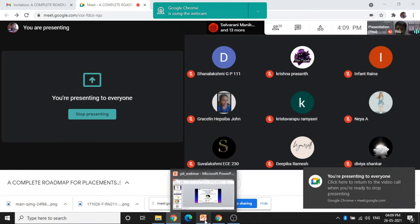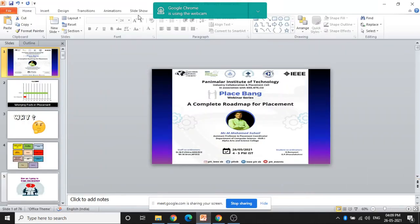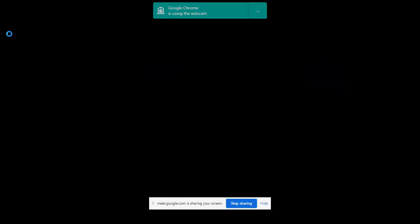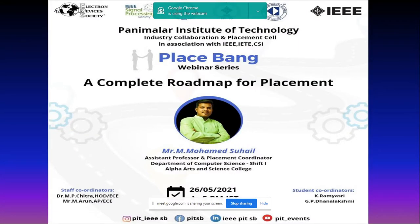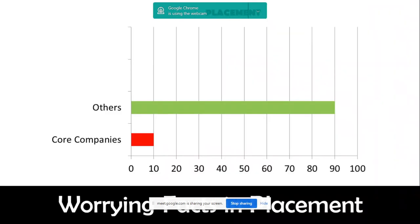Can you all see my shared screen? My PPT? Is it visible? So we'll start. First and foremost thing is about worrying factors about placement. Like most colleges, whether arts and science or engineering, out of 100% of strength, only I could say 10 to 15% rarely get placed into the core companies.